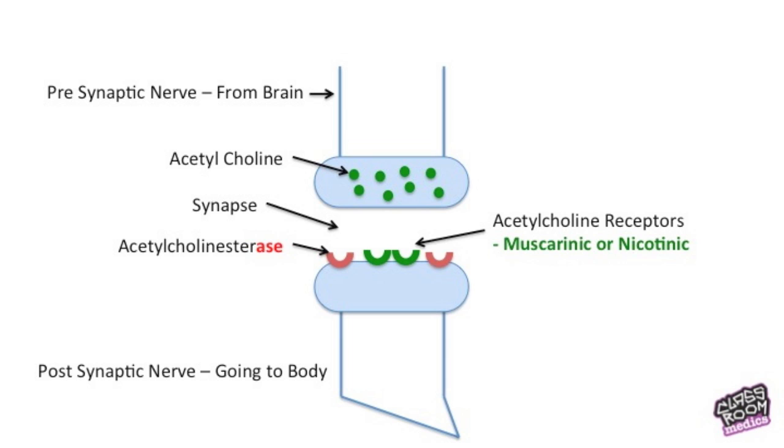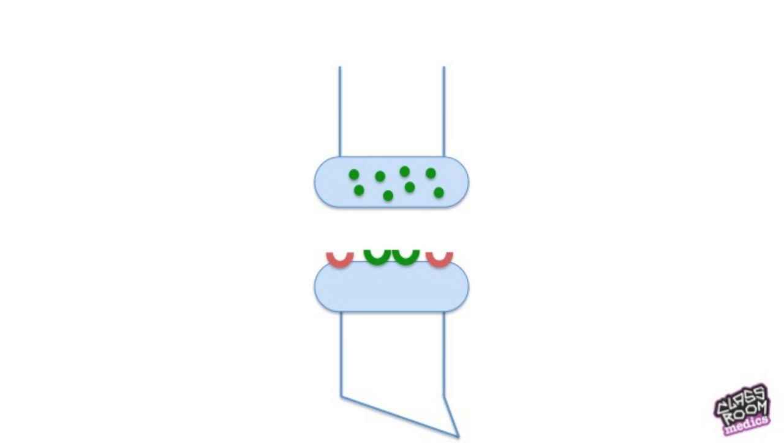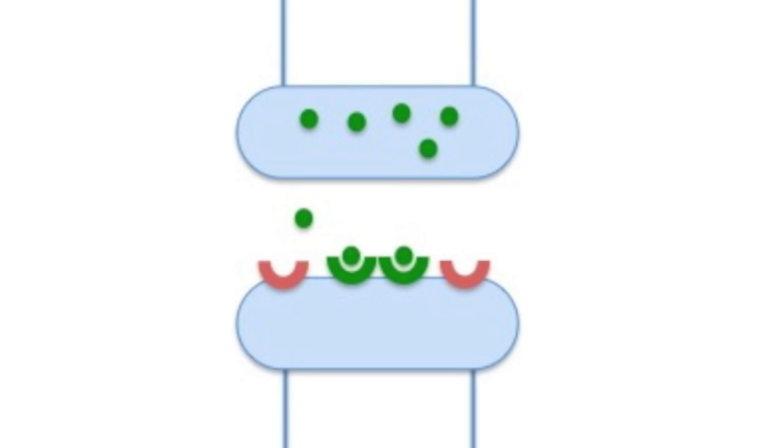So basically what happens in a normal nerve is the acetylcholine is released from the first nerve, it travels across the synapse and binds to its receptors which will have its effect later on. We'll look at the effects of this nerve in a little while. So the acetylcholine is released from the first nerve, travels across the synapse and binds to its receptor. Then to get rid of it, the acetylcholine binds to the enzyme, the acetylcholine esterase which breaks it up into parts that are then reabsorbed into the first nerve and then the acetylcholine is rebuilt again.